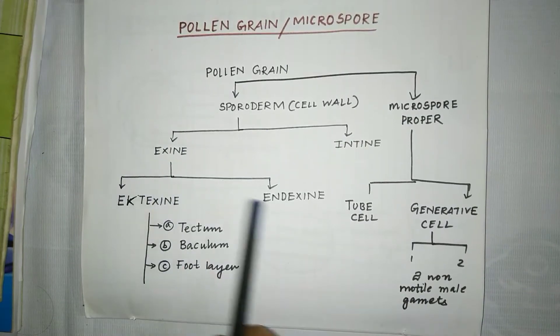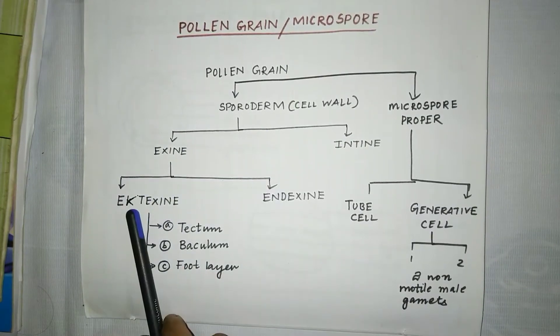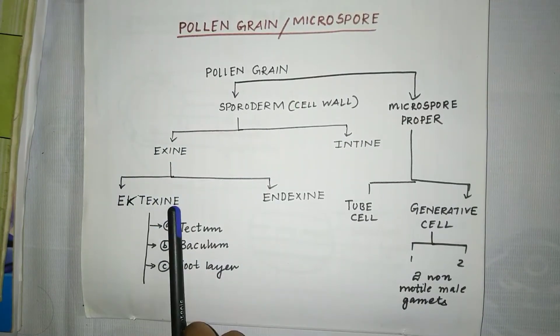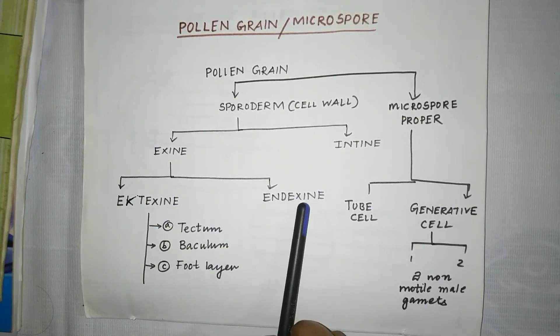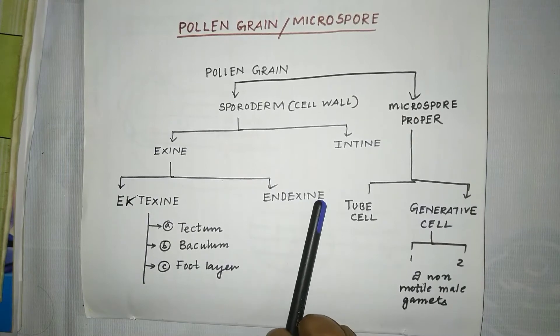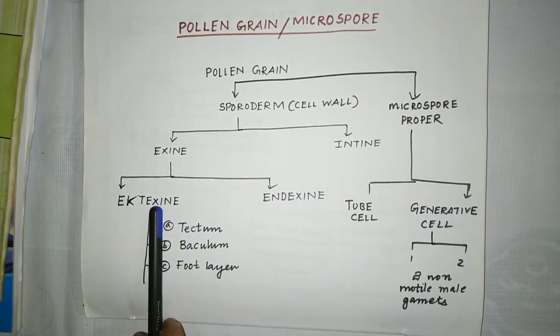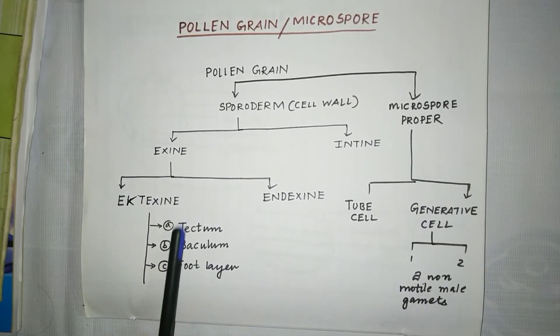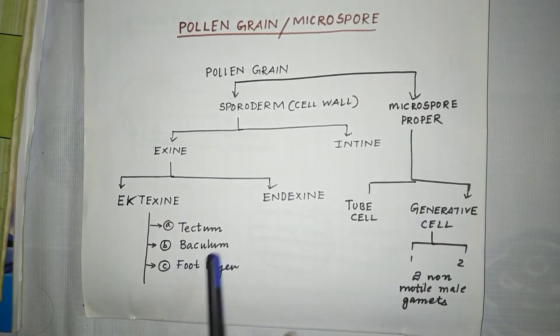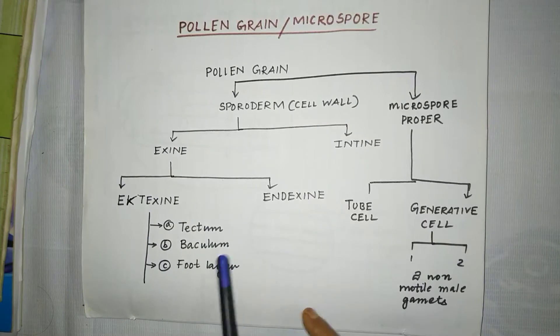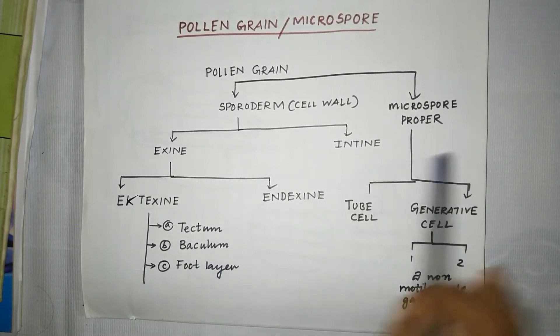Exine is again divided into two parts: extexine and endexine. Extexine is again divided into three parts: tectum, vaculum, and foot layer.